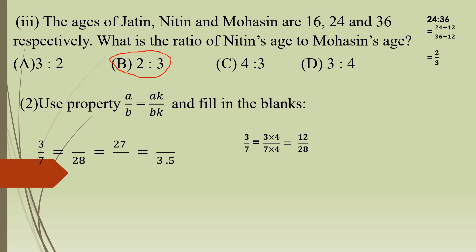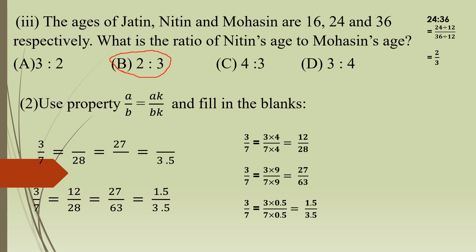For the second blank, the numerator 27 is given. Since 3 nines are 27, multiply the denominator by 9 as well: 7 nines are 63, so it becomes 27 upon 63. For the last blank, the denominator is 3.5. Since 7 multiplied by 0.5 gives 3.5, multiply the numerator: 3 into 0.5 equals 1.5. So the complete answer is 3 upon 7 equals 12 upon 28 equals 27 upon 63 equals 1.5 upon 3.5.